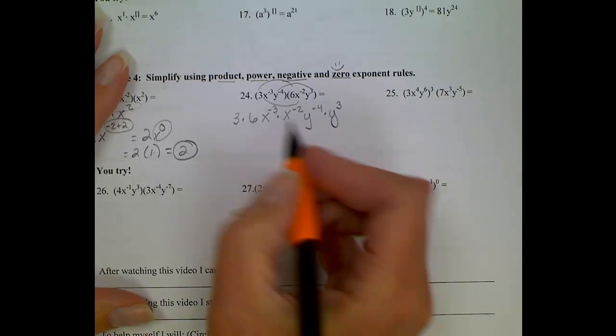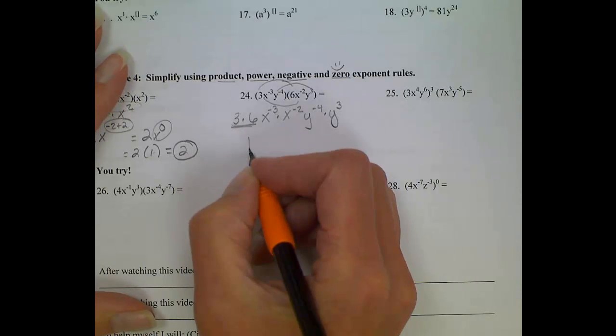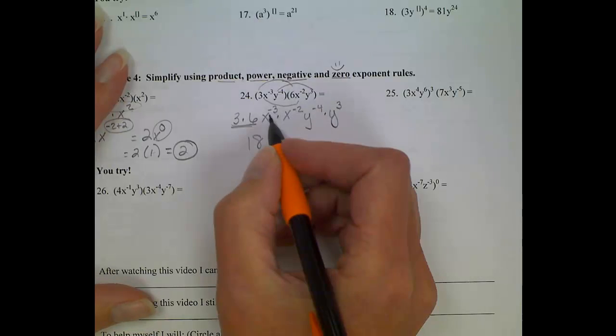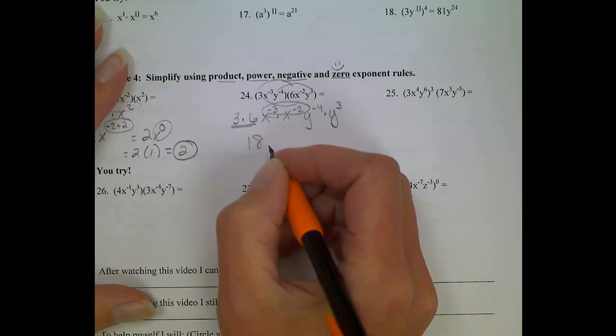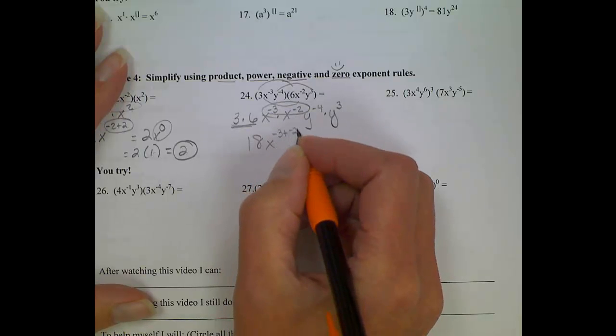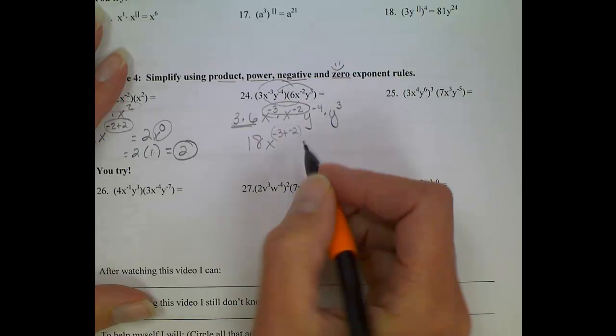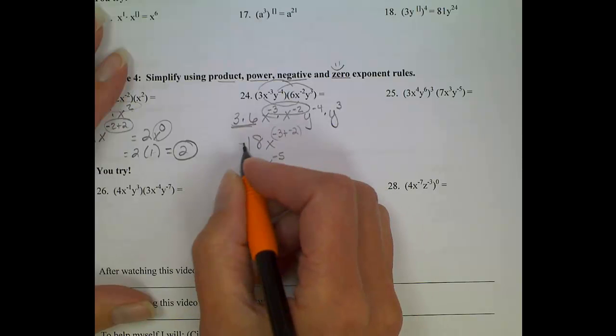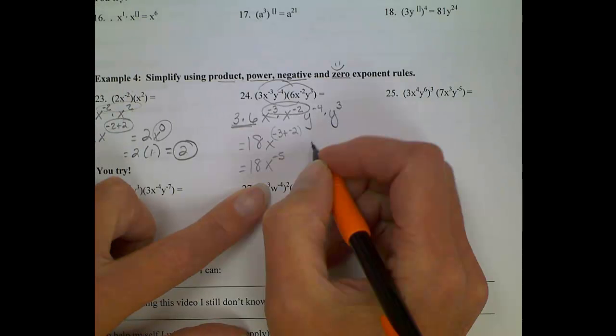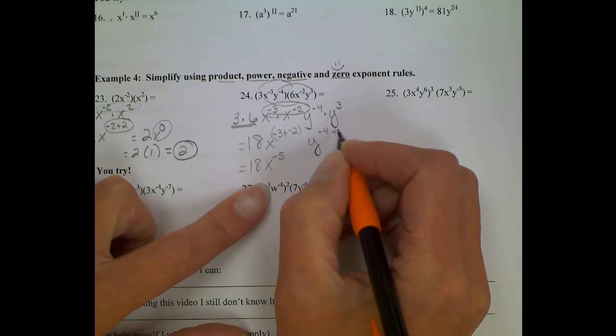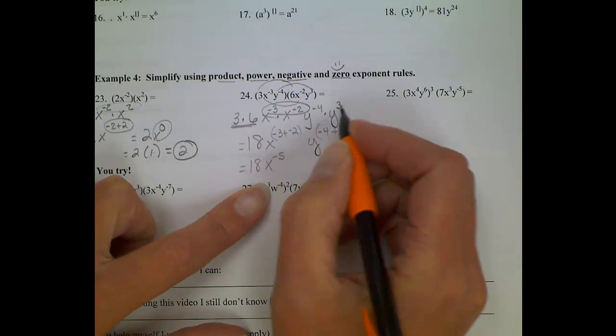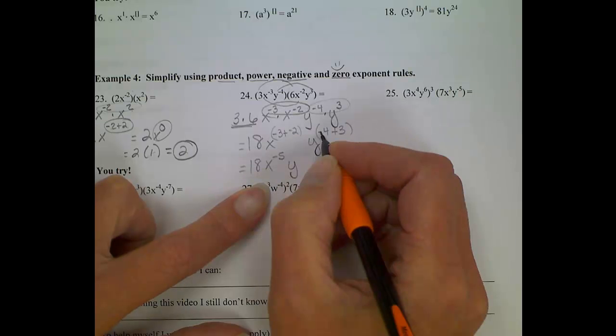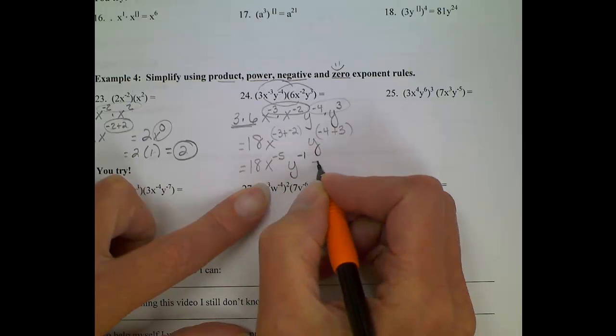Okay, so you've got three times six. That'll give you 18. You have x to the negative three times x to the negative two. What are you doing with those powers? You're adding them. That will give us x to the negative five. We'll bring our 18 down too, so we don't forget about it. Times, we're left with y to the negative four, times y to the third, and again, we're adding exponents, so we get negative four plus three, negative one. Not finished.